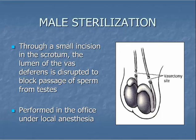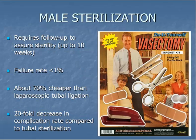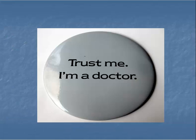Male sterilization, referred to as a vasectomy, is a very effective permanent contraceptive method. It involves interruption of the vas deferens in the scrotum through a small scrotal incision. This procedure can be performed in the office under local anesthesia. Male sterilization has a low failure rate and is cheaper with fewer complications than female sterilization, though it does require follow-up to assure sterility. Thank you for your attention during this video presentation on contraception and sterilization.